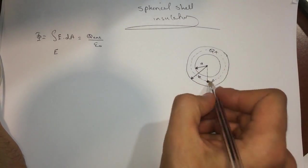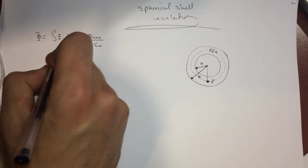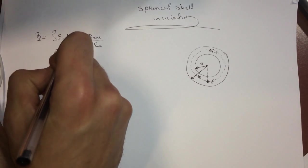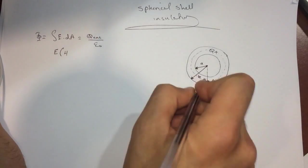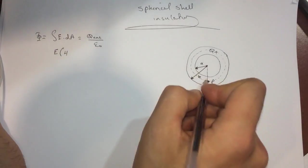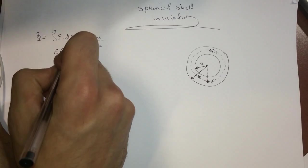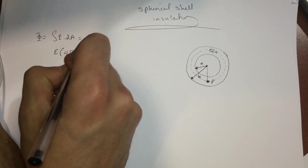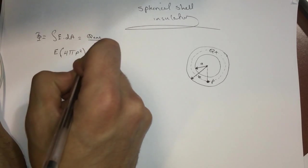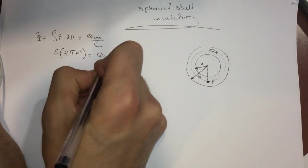And then the dA, the integral of dA for this Gaussian surface will be just the surface of this sphere that has a radius of P. The surface of the sphere at point P that has a radius P is 4πP².